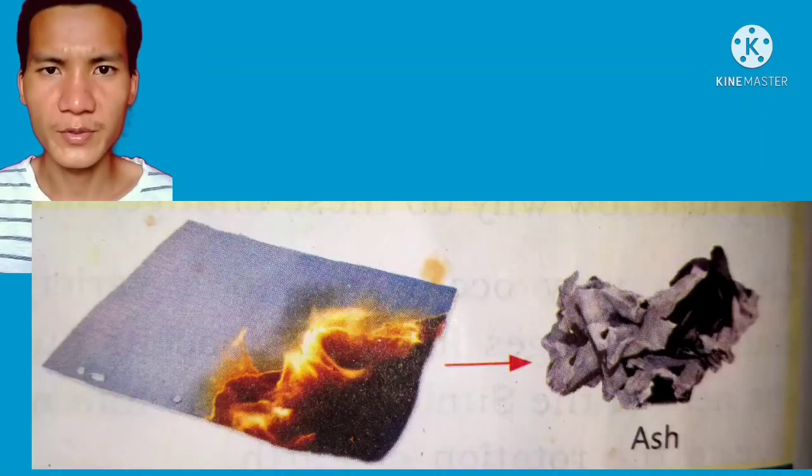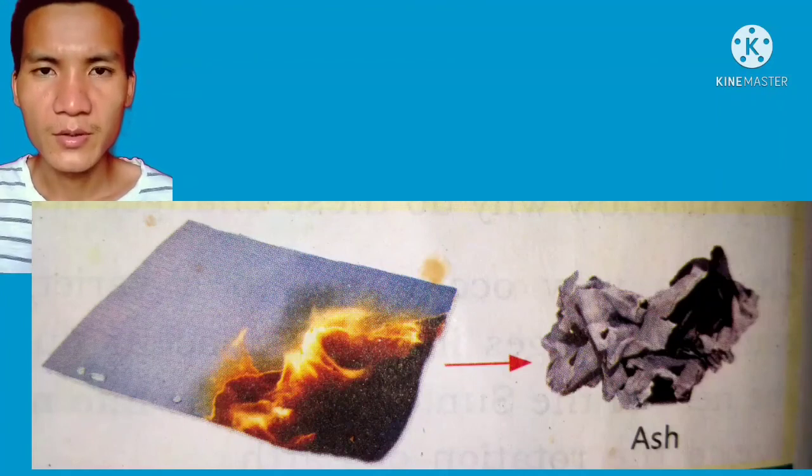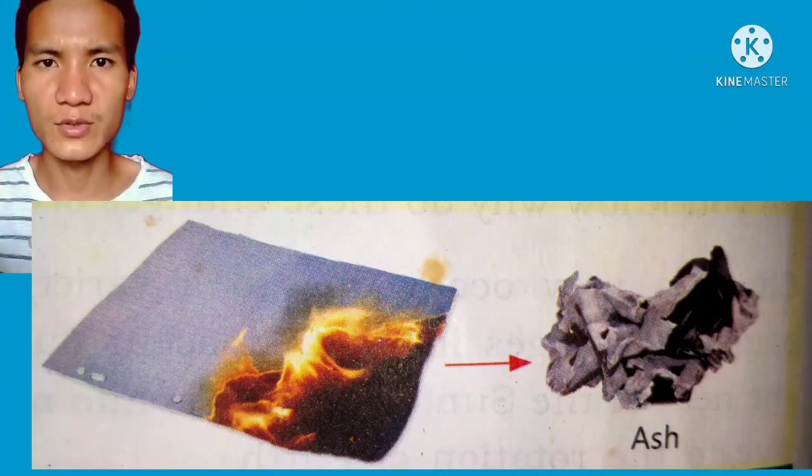In chemical changes, we need the help of another substance or object to produce a new substance. For example, to put fire on firewood, we need the help of a match or a lighter. Also, when you take a piece of paper and burn it, it turns into ashes, and you cannot turn those ashes back into paper. So this is called an irreversible change, which occurs in chemical changes.